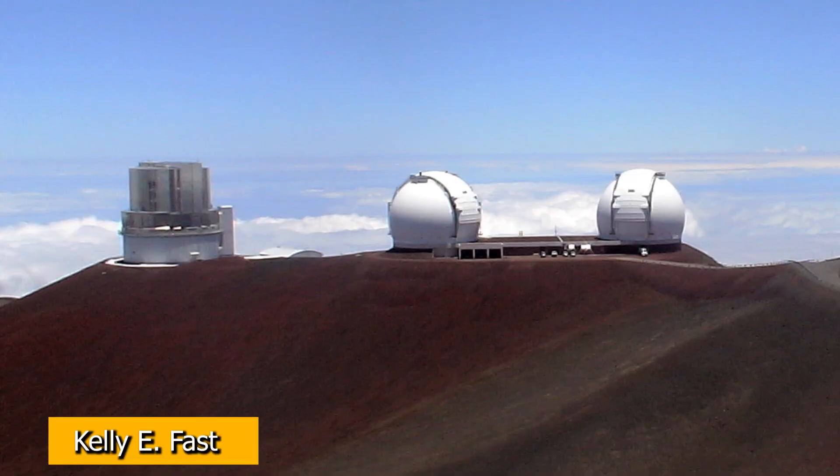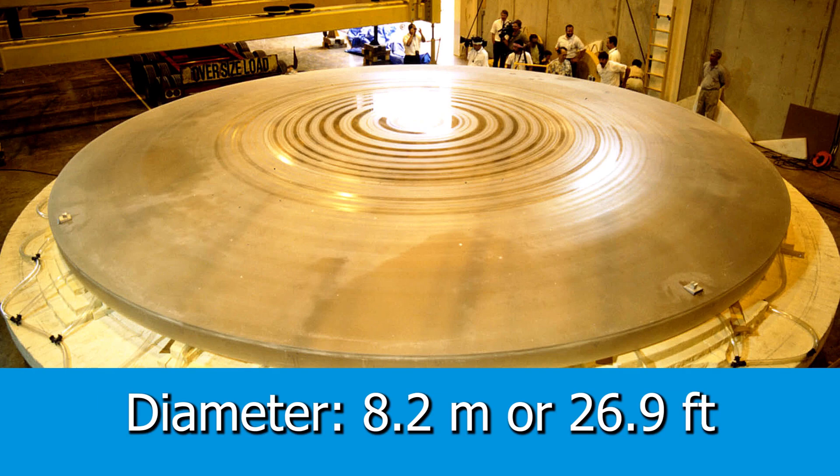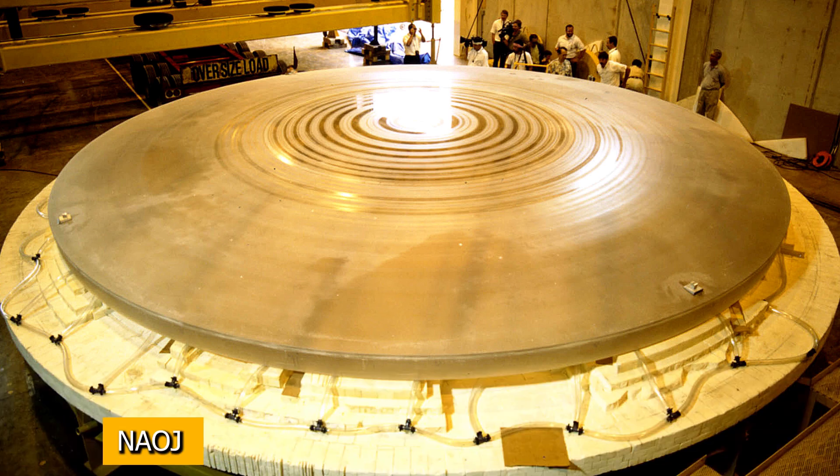It's really interesting because these moons were actually discovered using a ground-based telescope, the Subaru Telescope in Hawaii. The primary mirror for this telescope is 8.2 meters in diameter, or essentially a little bit taller than if a giraffe were to lie down on top of it.